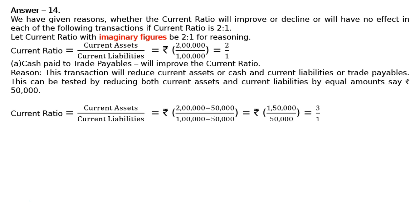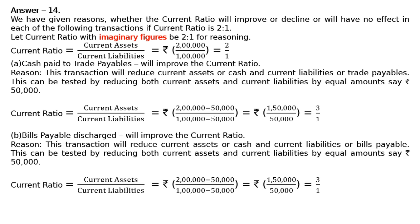Part B: Cash paid — bills payable discharged. Bills payable discharged will improve the current ratio. Reason: this transaction reduces current assets (cash) and current liabilities (bills payable). Tested by reducing both by Rs. 50,000: Current ratio = (Rs. 2 lakh − Rs. 50,000) / (Rs. 1 lakh − Rs. 50,000) = Rs. 1,50,000 / Rs. 50,000 = 3:1. Same result as Part A.